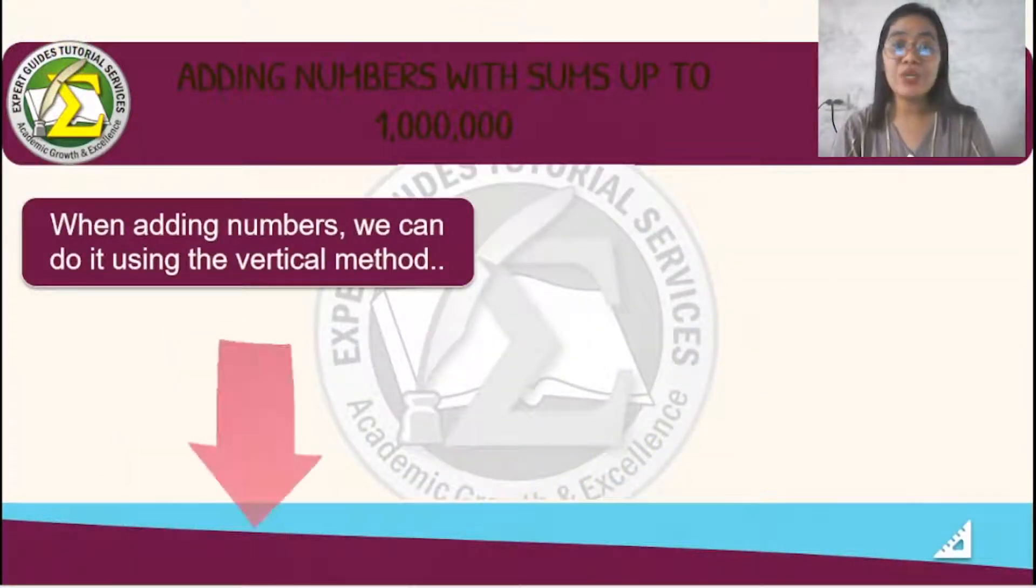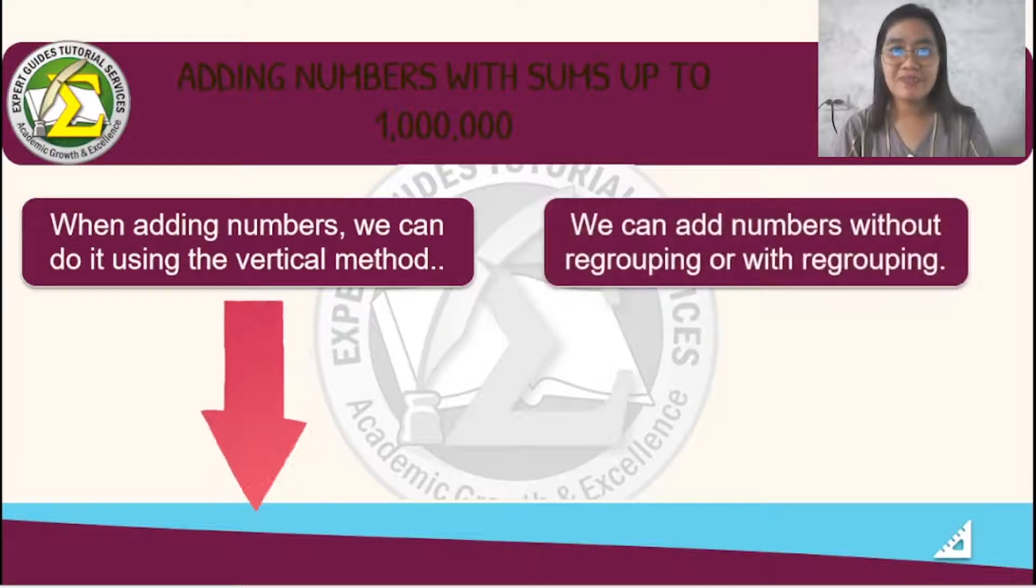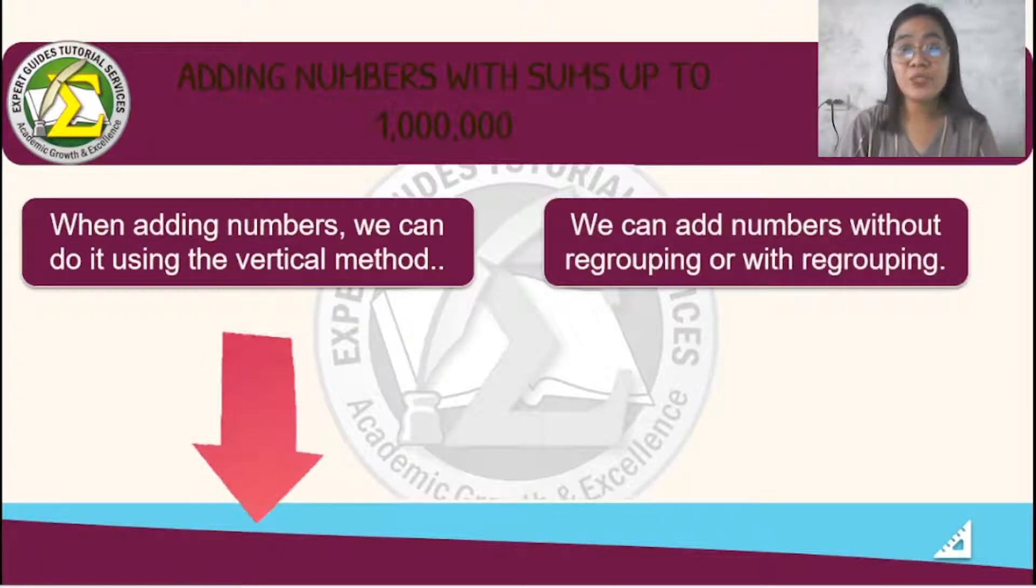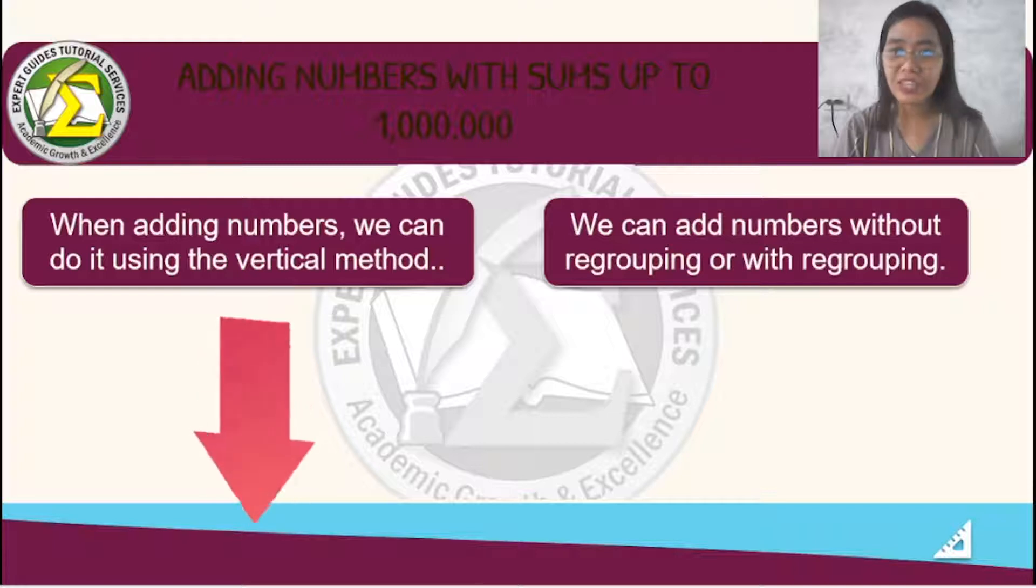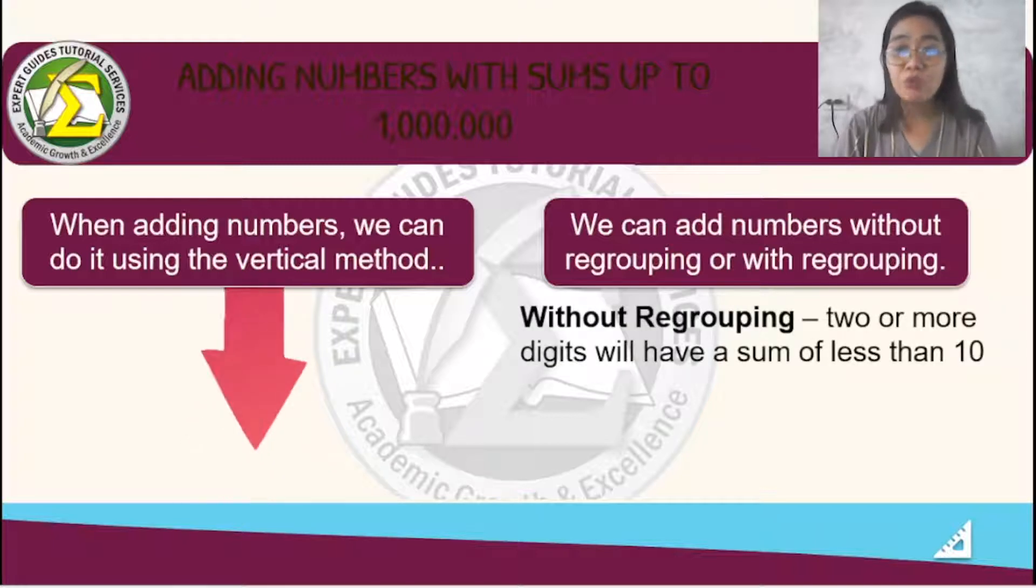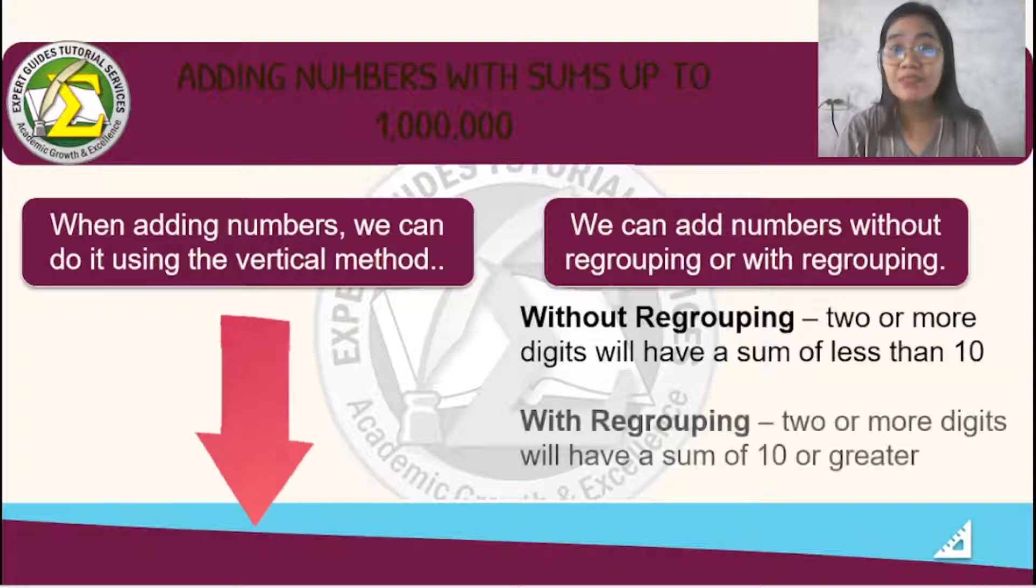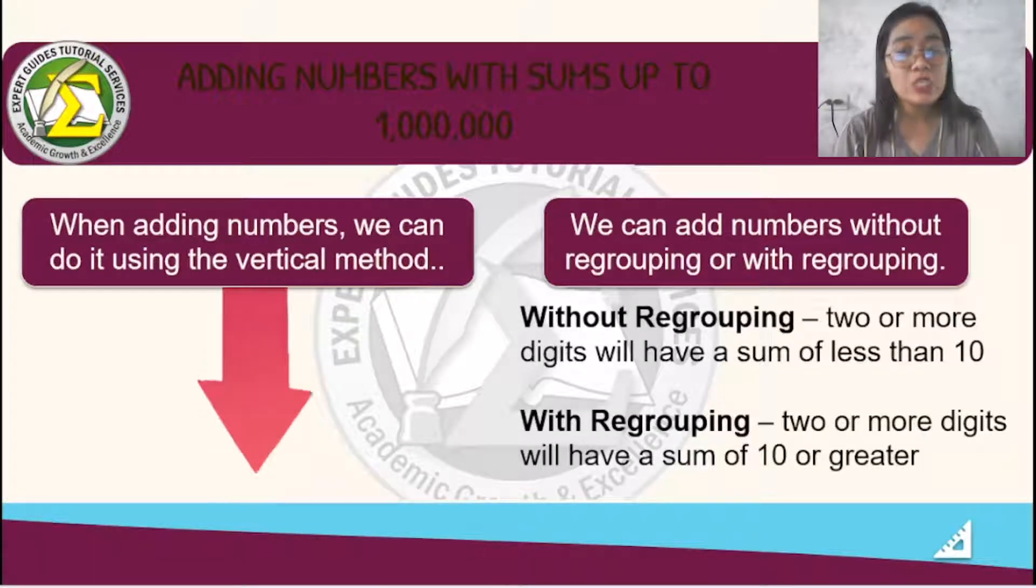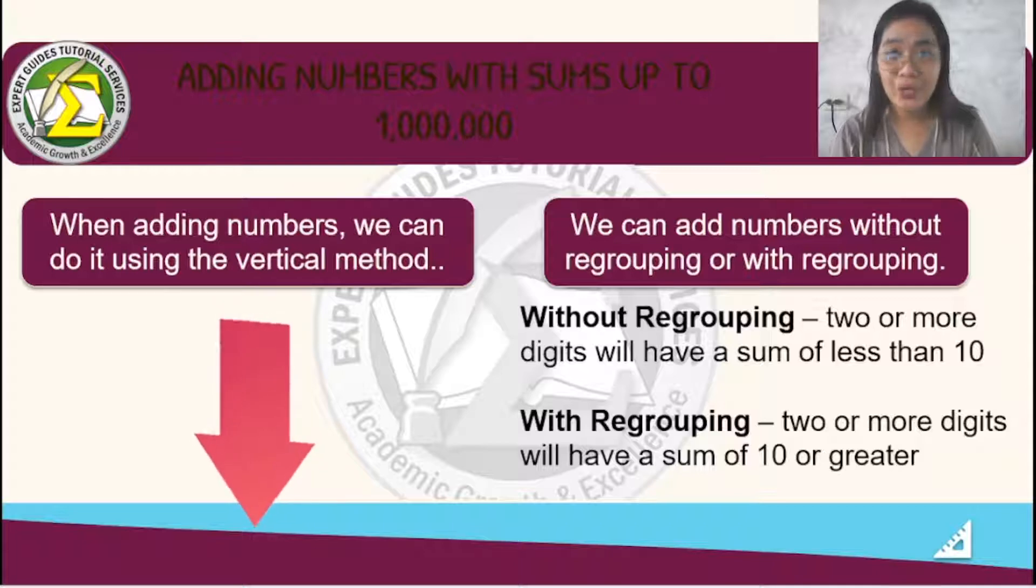So when adding numbers, we can do it using a vertical method. We can add numbers without regrouping or with regrouping. Without regrouping, two or more digits will have a sum of less than 10. With regrouping, two or more digits will have the sum of 10 or greater.